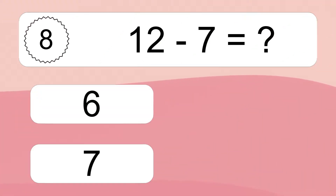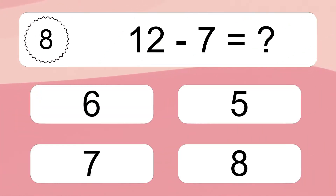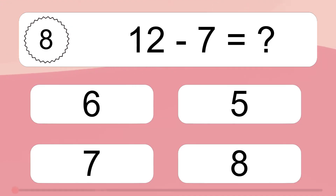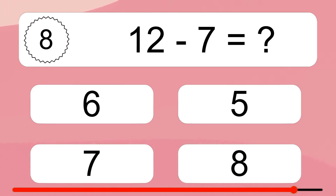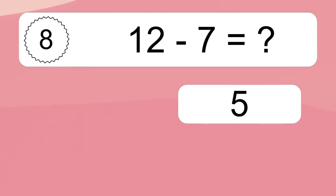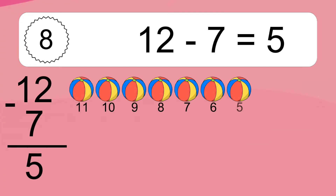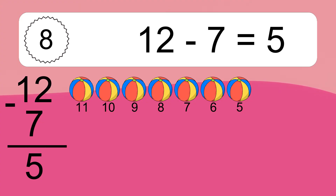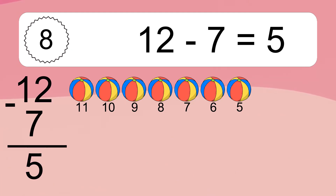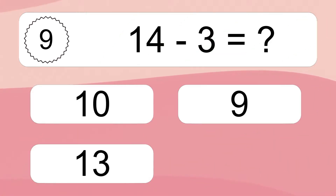12 minus 7 equals what? 12 minus 7 equals 5. Let's count it! 11, 10, 9, 8, 7, 6, 5. 14 minus 3 equals what?